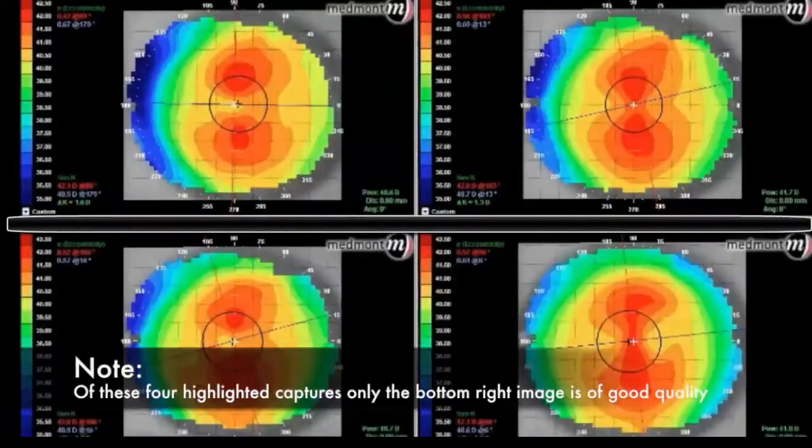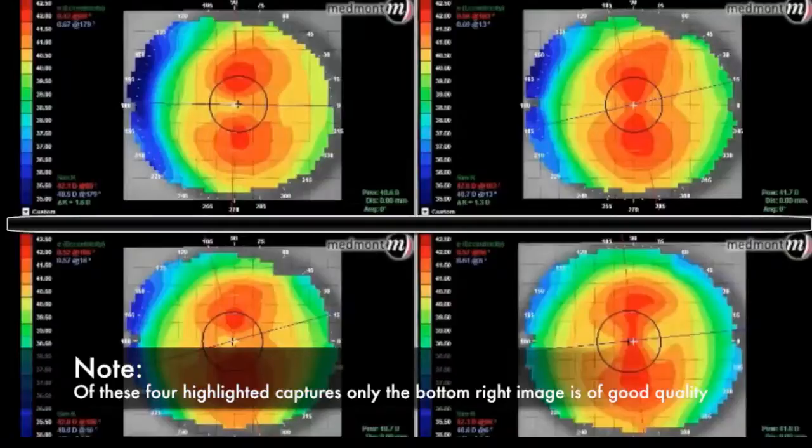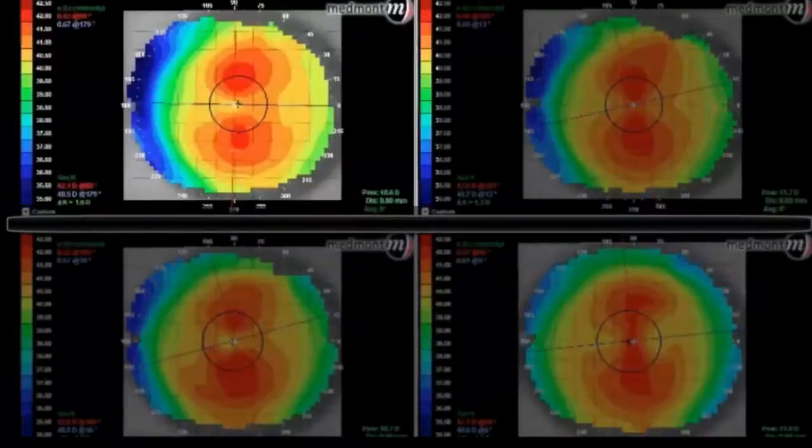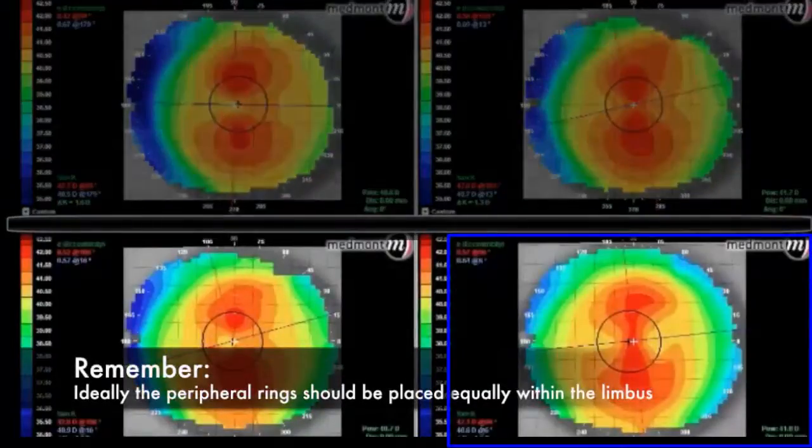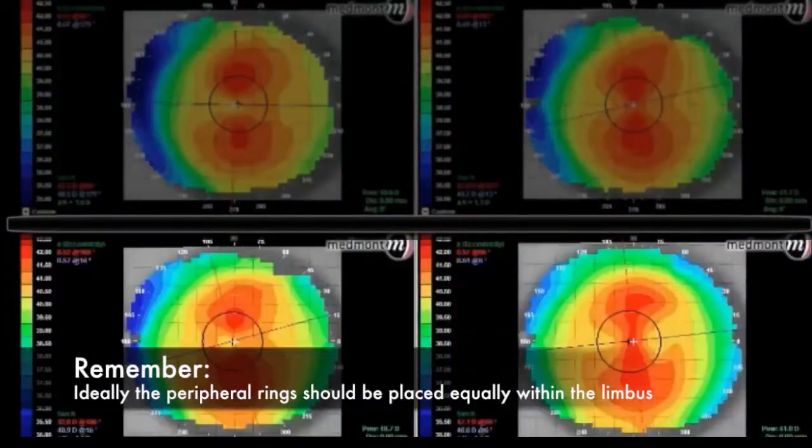If we look at the top left map, we see the blue colour is on the nasal side of the left eye. This means that the peripheral rings are not centralized within the limbus. Whereas if we look at the bottom right image, we see that the blue colour is spread evenly between the nasal and temporal side. This is ideal.